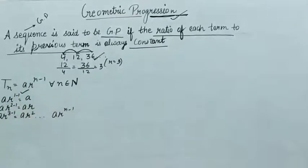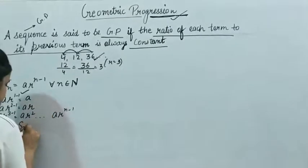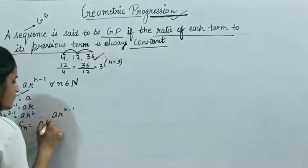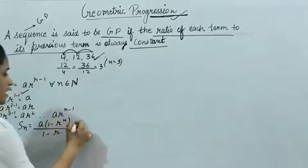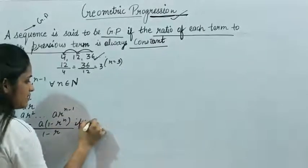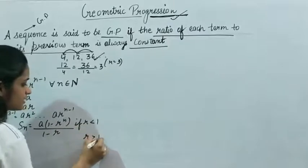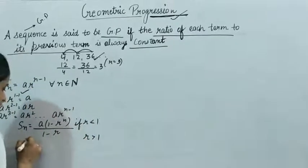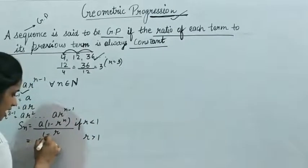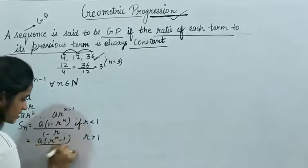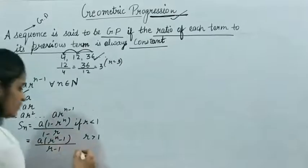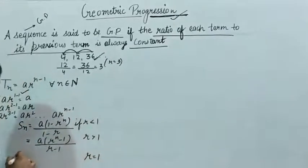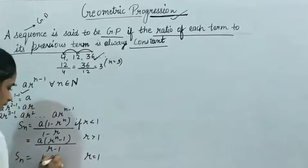Now, how to find the sum of a GP: S_n = a(1 - r^n) / (1 - r), if r is less than 1. If r is greater than 1, then S_n = a(r^n - 1) / (r - 1). And if r is equal to 1, then S_n is equal to n·a.